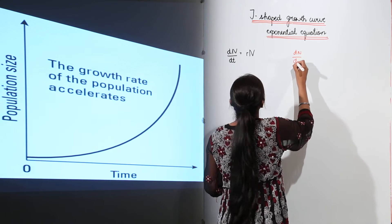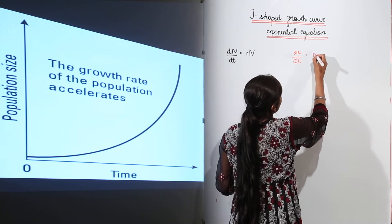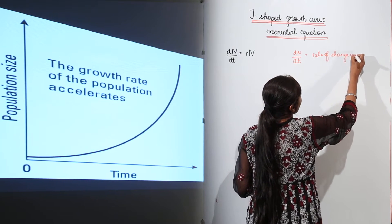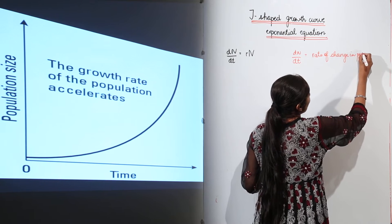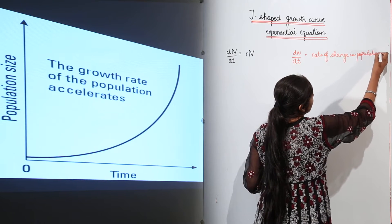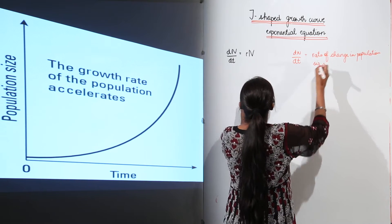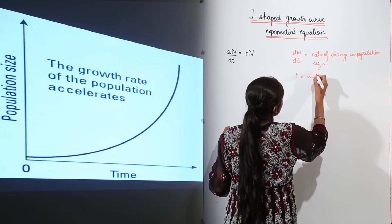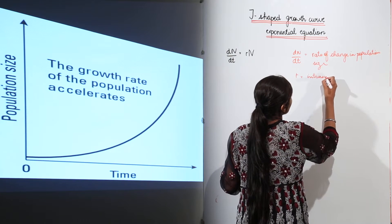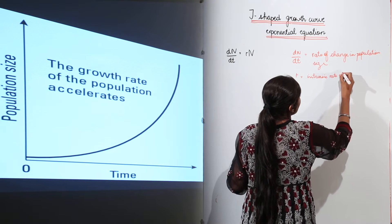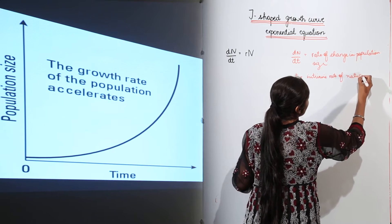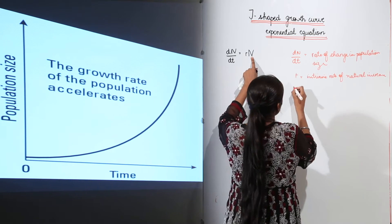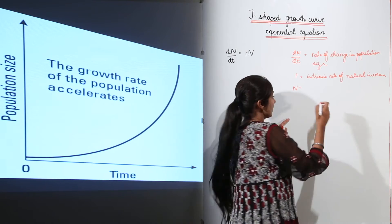dn upon dt actually refers to the rate of change in population size. And r refers to the intrinsic rate of natural increase.